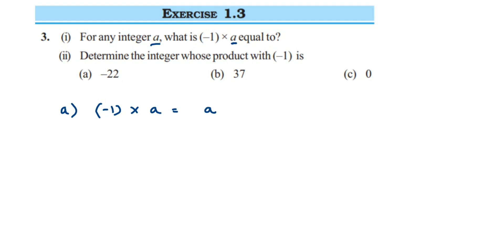But now since there's one negative sign, we'll get minus sign here. Because minus into plus is minus, we'll get minus a. Now based on this, we have to solve the second question also. What they're asking: determine the integer whose product with minus one is...